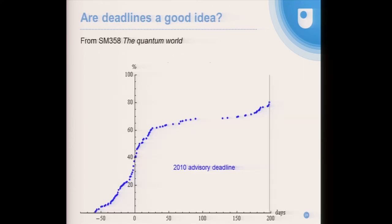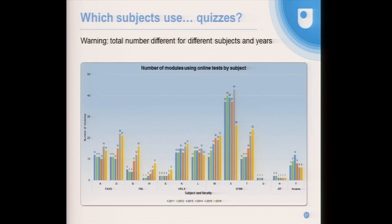One example compared a quiz without a hard deadline to when they put in a hard deadline — you must do it by the deadline or you can't do it later — and total completions went up. Looking at all our different subject areas and whether they use quiz: in the past it was kind of only STEM, but now really all subject areas use the quiz in some way for formative purposes. When it's summative, it's still not all faculties, but even the law faculty has now jumped on board with assessed quizzes.